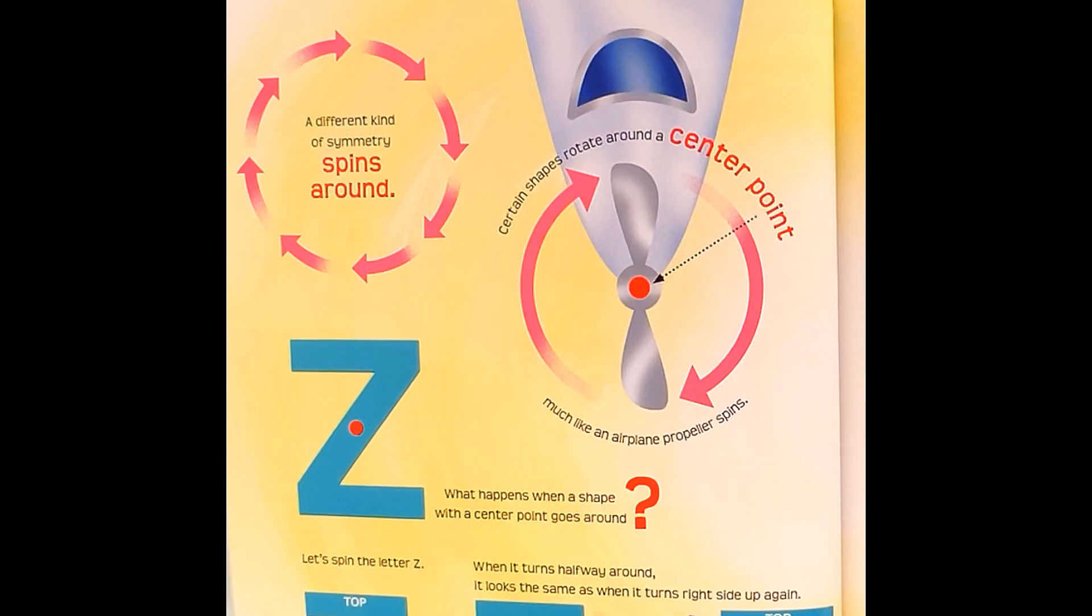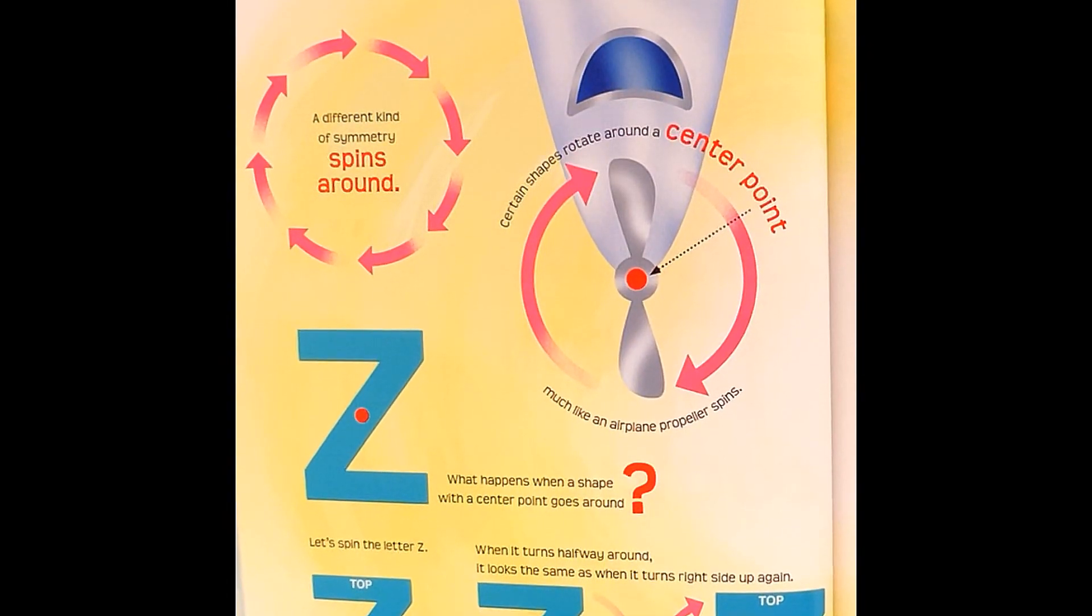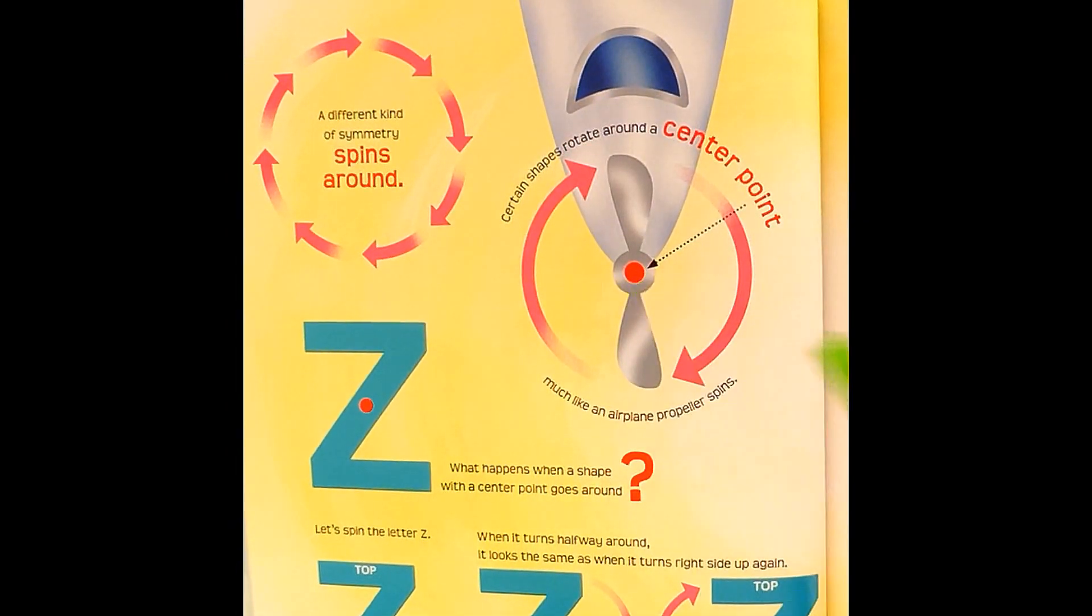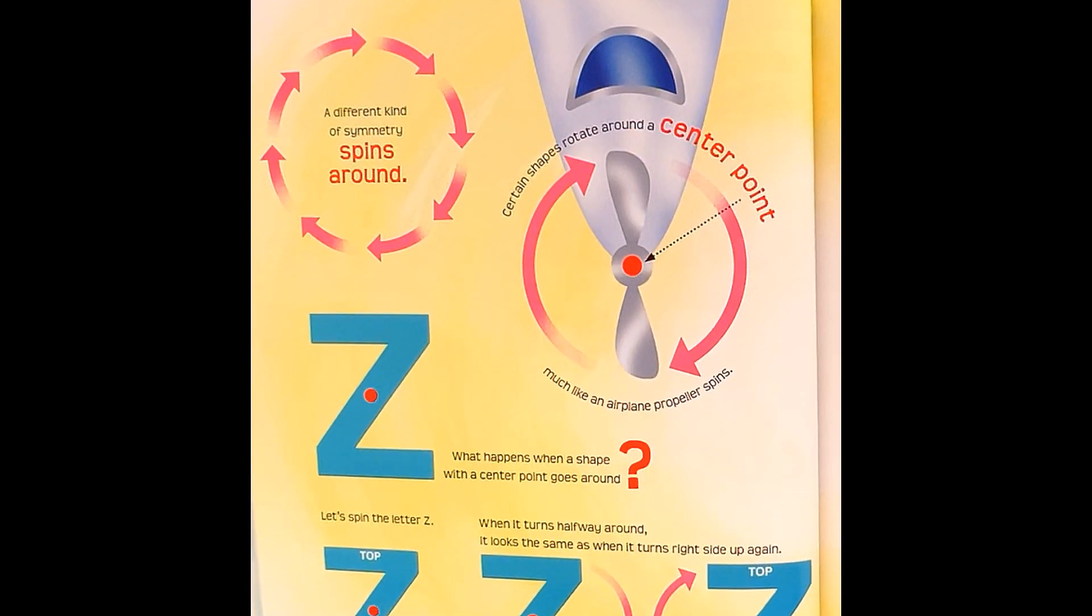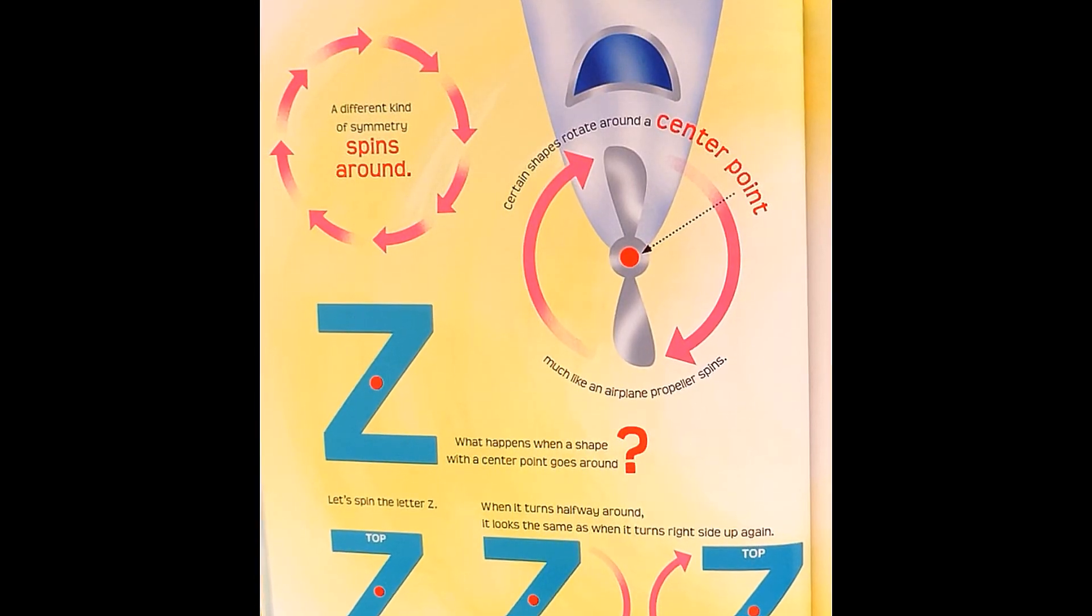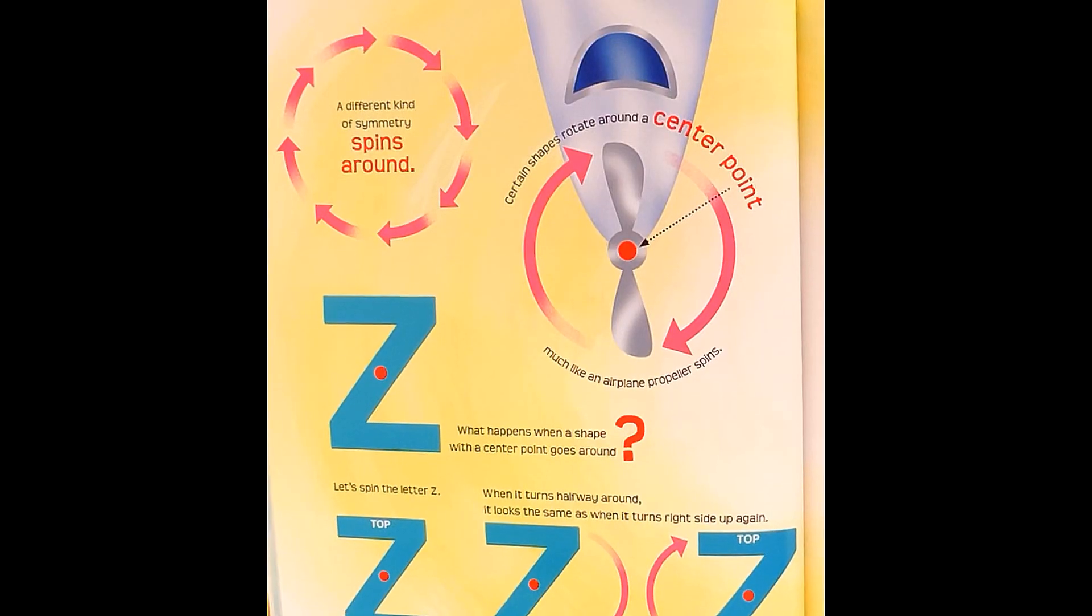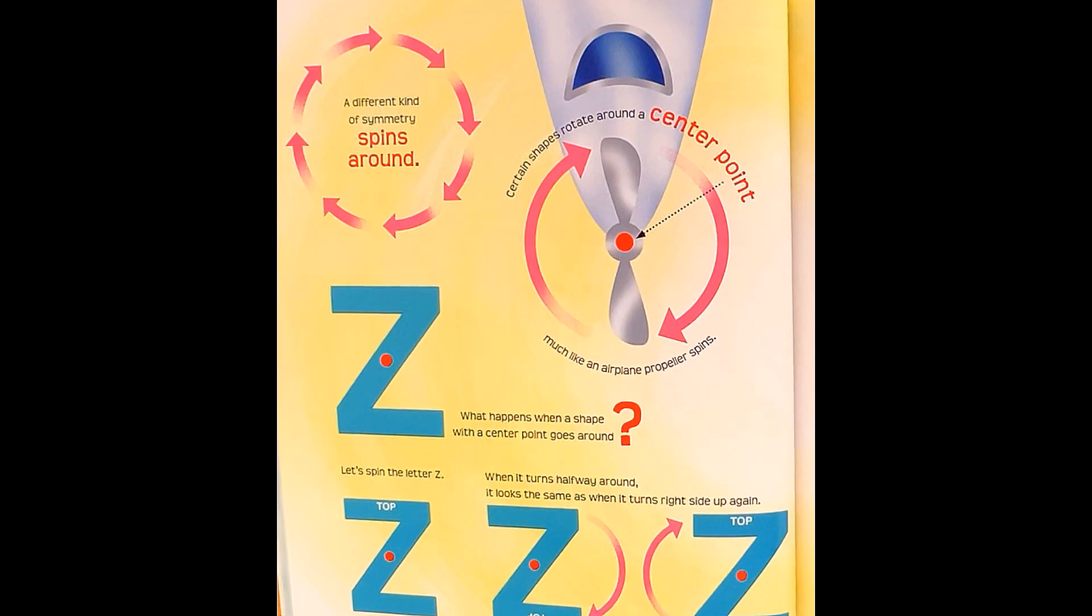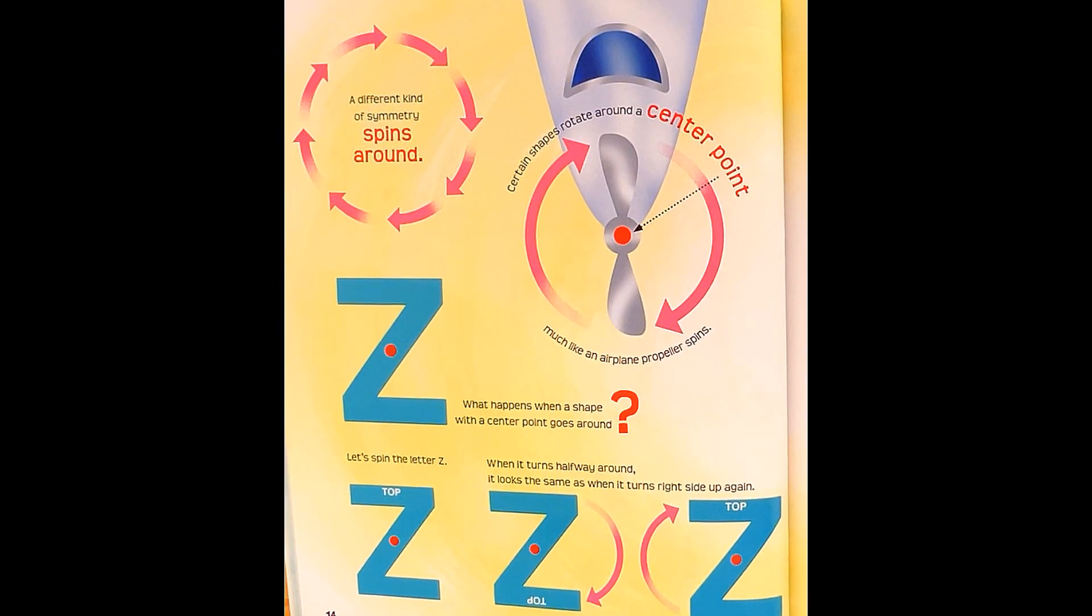A different kind of symmetry spins around. Certain shapes rotate around a center point, much like an airplane propeller spins. What happens when a shape with a center point goes around? Let's spin the letter Z. When it turns halfway around, it looks the same as when it turns right side up again. How many letters have a center point? See page 29.